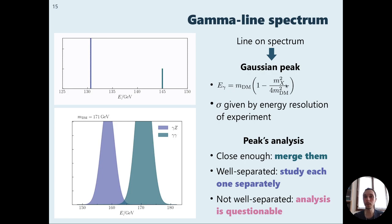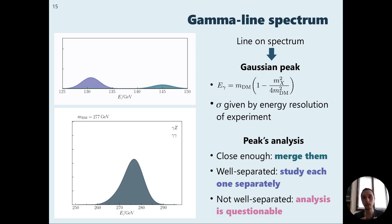An important step in this analysis pipeline is the analysis of the gamma line spectrum. We have one line for each final state, and these lines are at a fixed energy. In an experimental setup, we need to take into account the energy resolution, which is going to smear each line into a Gaussian, basically. And then we can add three different cases.